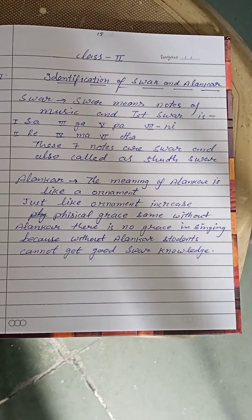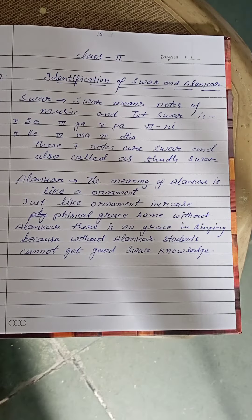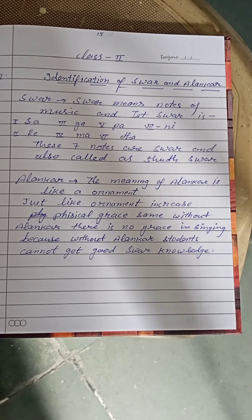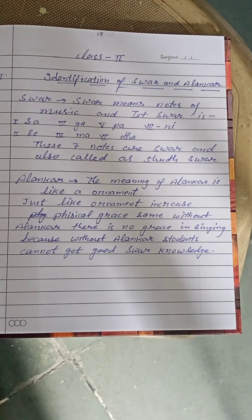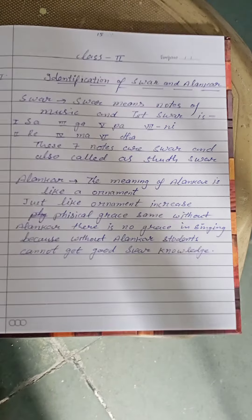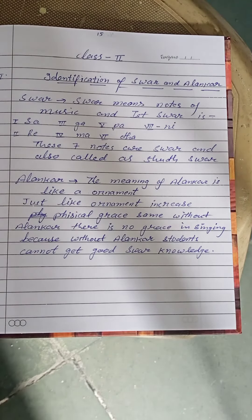I have already told you last year what is Swar and Alankar. Swar means notes of music. The first Swar is Sa, Re, Ga, Ma, Pa, Dha, Ni. These seven notes are Swar and are also called Shudh Swar.